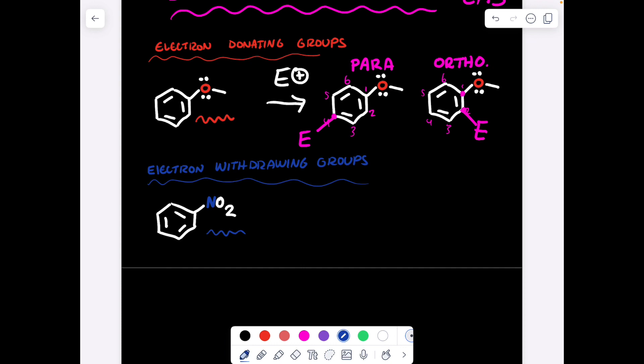Whereas when benzene has an electron withdrawing group attached, such as NO2, the electrophile is directed to the meta position. If you label in the same fashion, one, two, three, four, five, six, will be the three and or five positions.